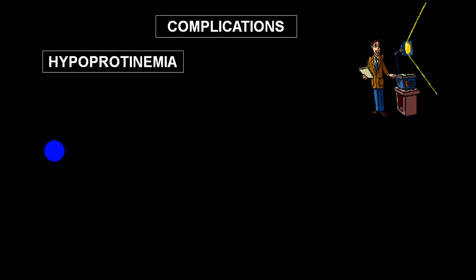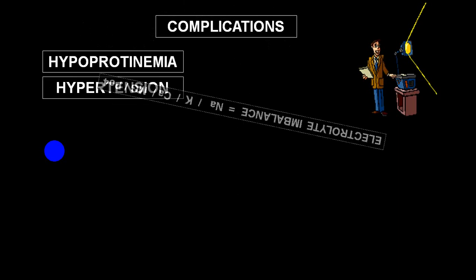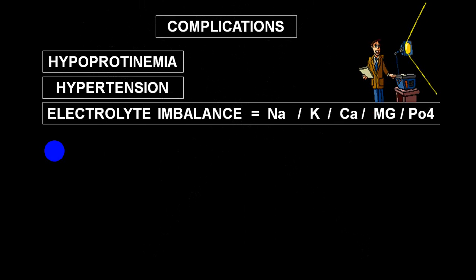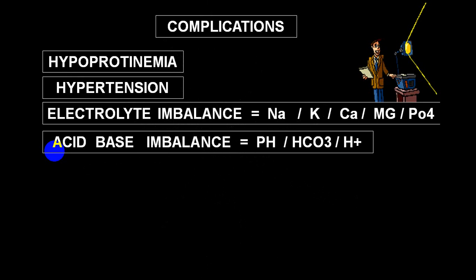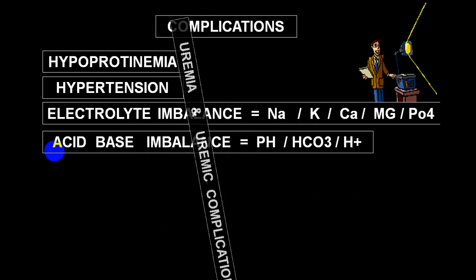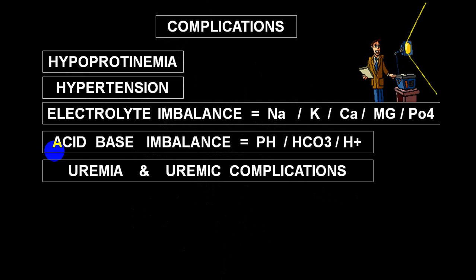Complications include hypoproteinemia (most common), secondary or renal hypertension, and electrolyte imbalances. Initially hypernatremia and hyperkalemia are seen, but depending on diuretics and diet, hyponatremia or hypokalemia can occur. Calcium is almost always low (hypocalcemia). Hypomagnesemia and elevated phosphate levels also occur. Acid-base imbalance is predominantly acidosis. Uremia and uremic complications are the most common complications from urea retention. End-stage renal failure carries high mortality.